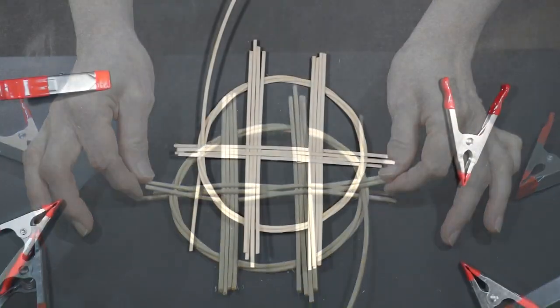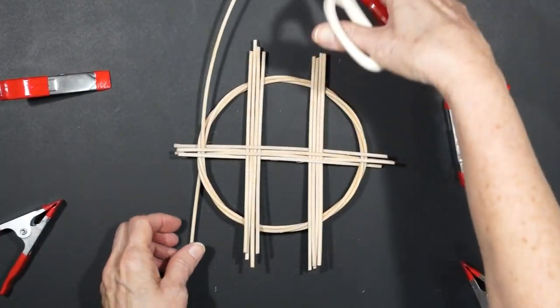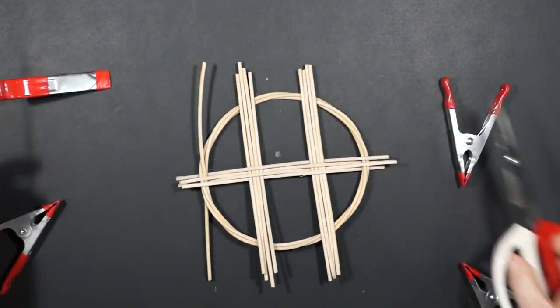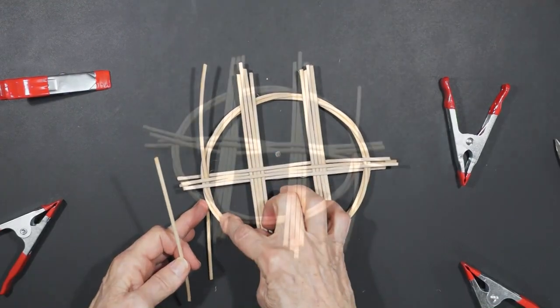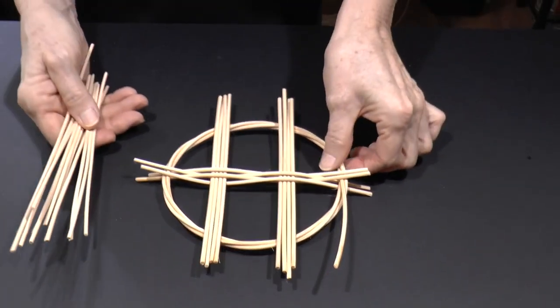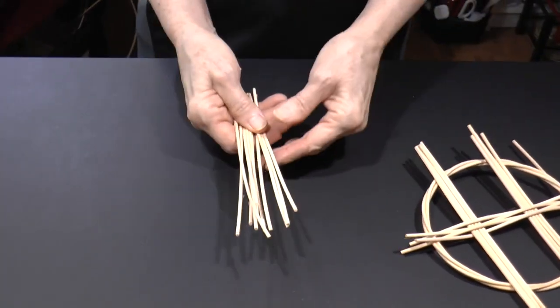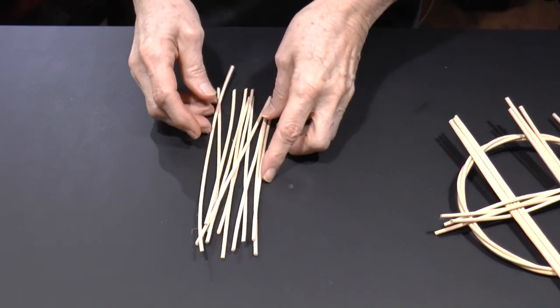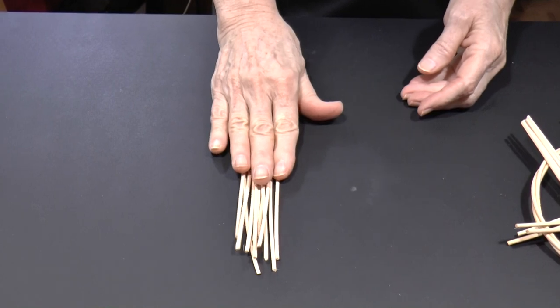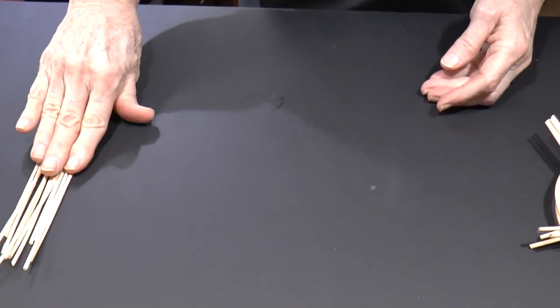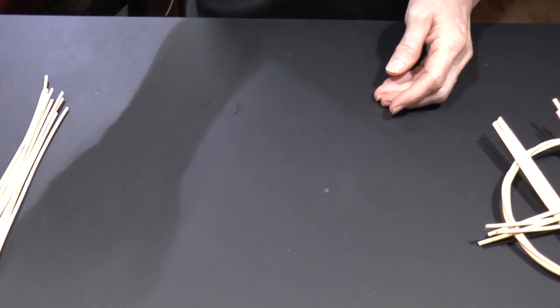We can now remove the clamps, since the tension of the weavers is now strong enough to hold itself together. We'll also remove some of the excess of this long tail, so it'll make our work a little bit easier. We are not yet ready to trim those tails to their final lengths. As we continue to weave to the outer edges of the trivet, there are several ways that we can do this. One way is to cut 40 to 50 of these 7 inch weavers and continue, as we have been doing, working out from the center.